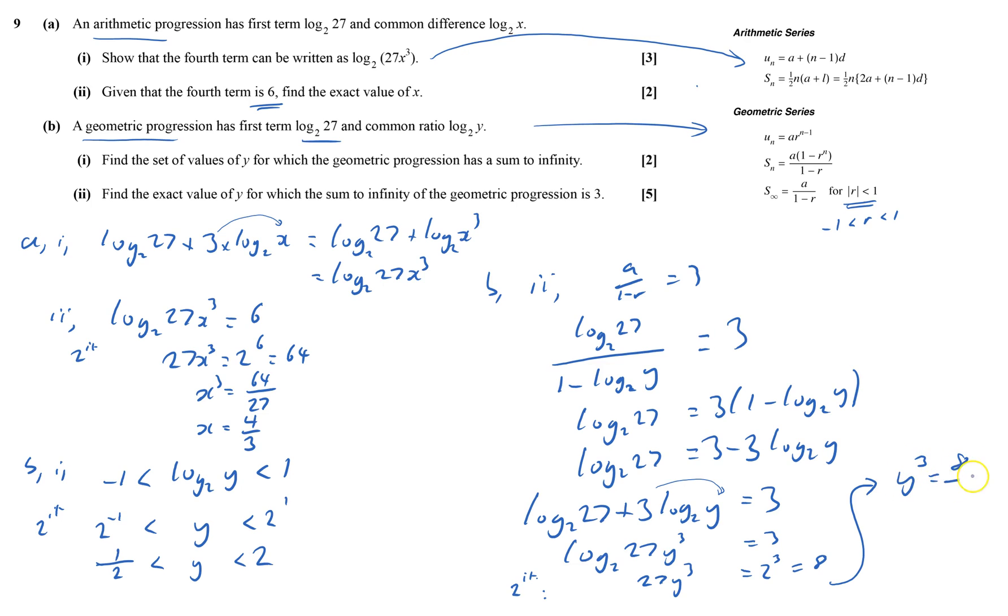And so y equals cube root of 8 is 2, cube root of 27 is 3. Nice number, and so it's likely to be right. And indeed it is. And that's question nine and the whole paper done.